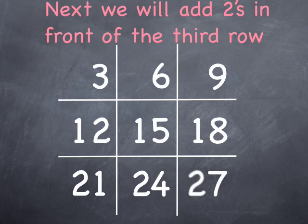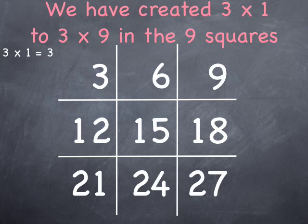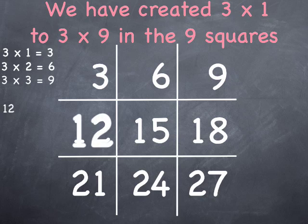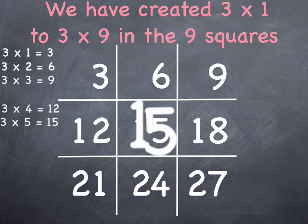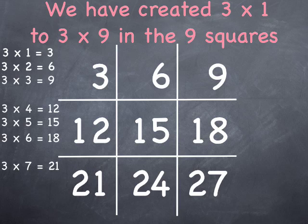Wow! We have created skip counting by threes. 3 times 1 is 3, times 2 is 6, times 3 is 9. 3 times 4 is 12, times 5 is 15, times 6 is 18. 3 times 7 is 21, times 8 is 24, and times 9 is 27.